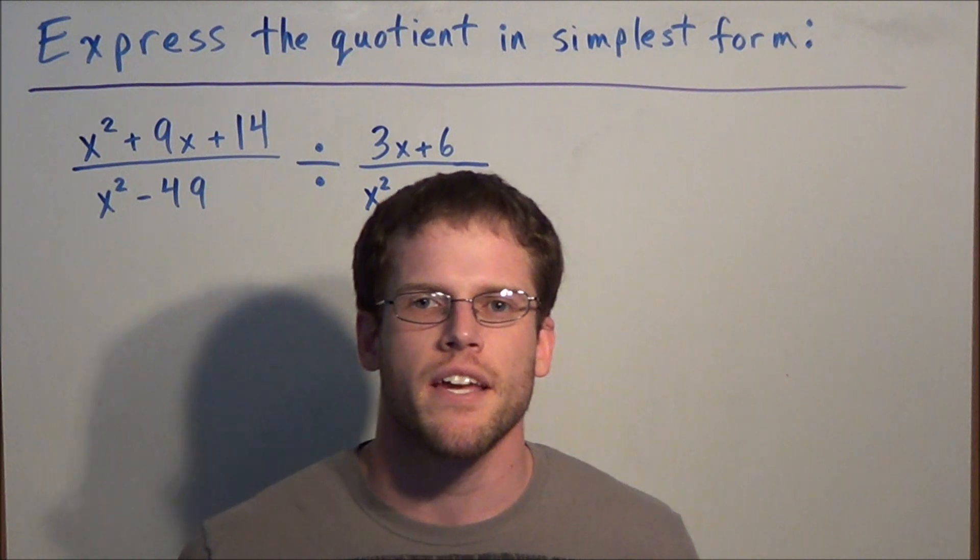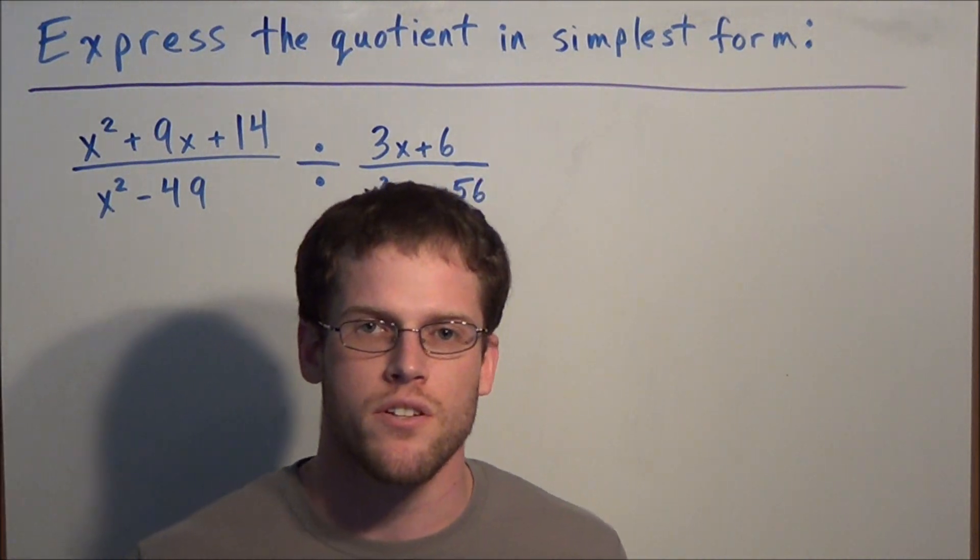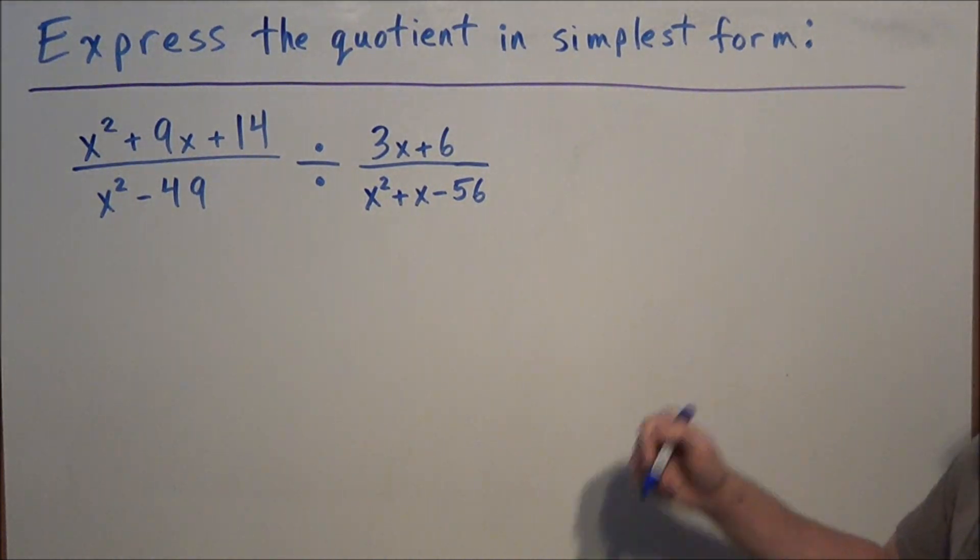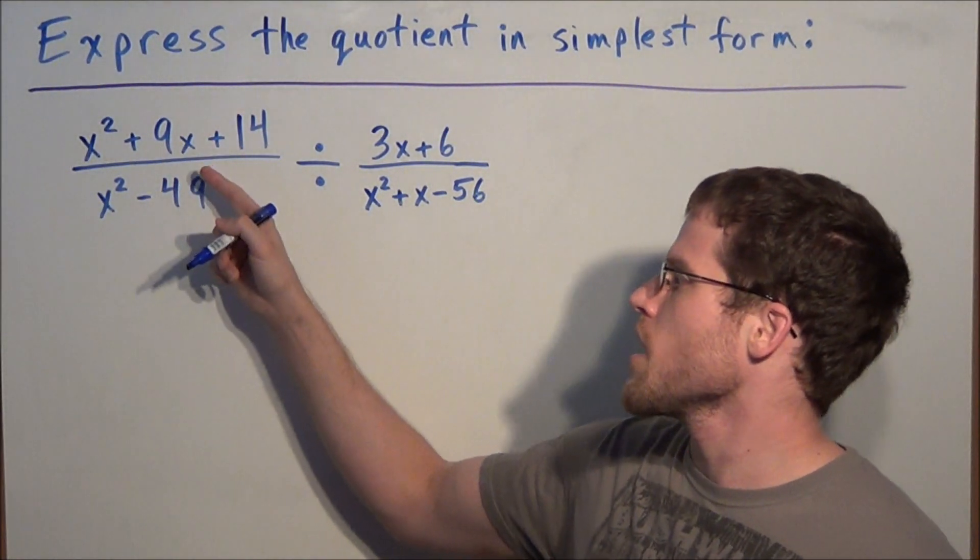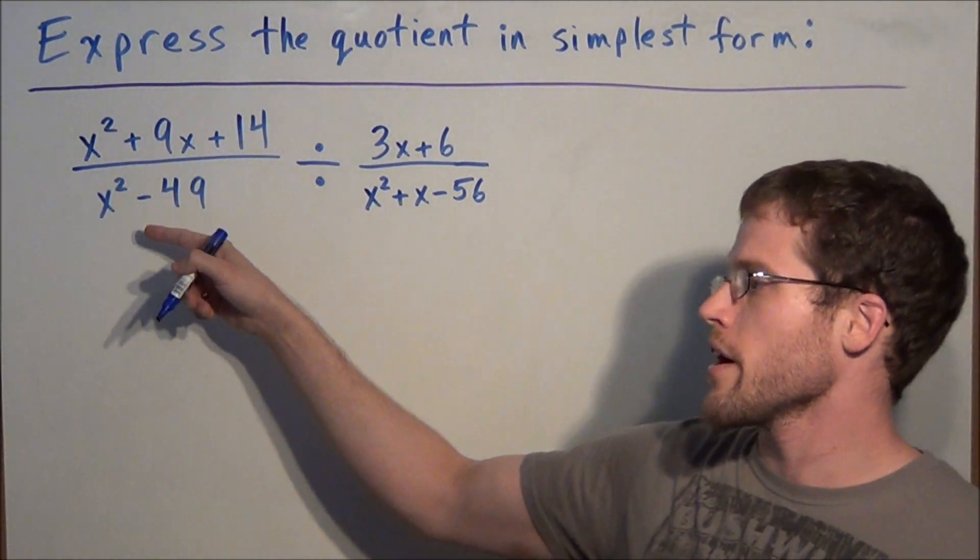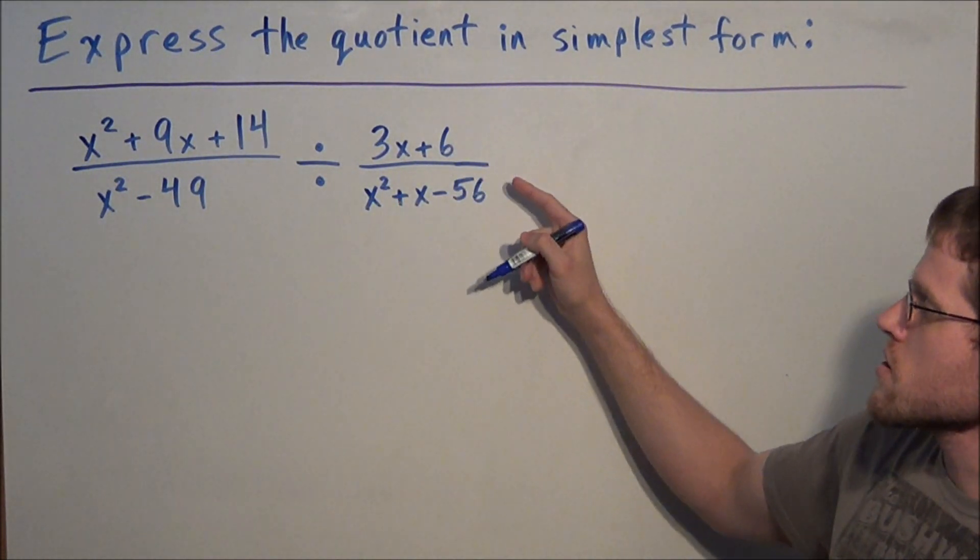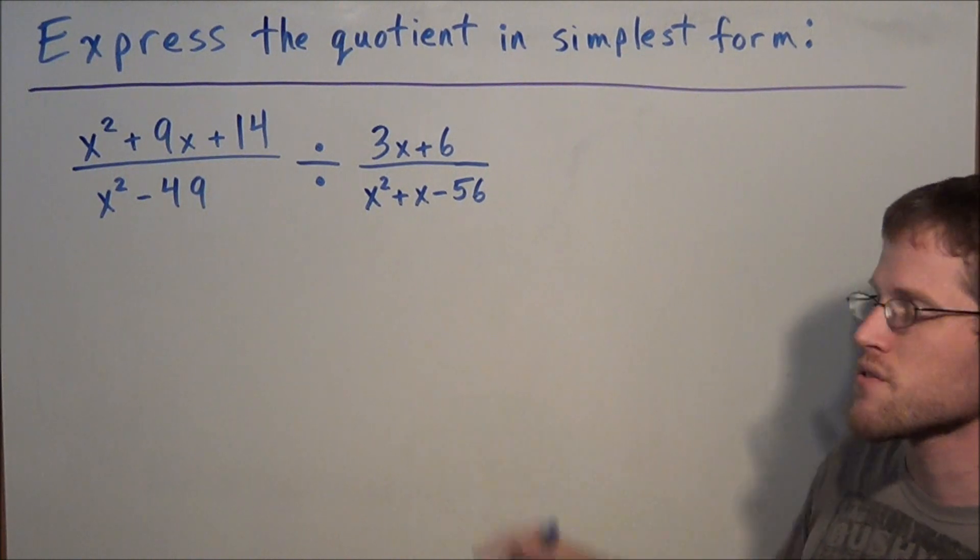Hi, my name is Mr. D and today I want to take a look at dividing rational expressions. We have expressed the quotient in simplest form and we're looking at x squared plus 9x plus 14 over x squared minus 49 divided by 3x plus 6 over x squared plus x minus 56.